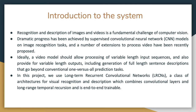The recognition and description of images and videos is a fundamental challenge of computer vision, but dramatic progress has been achieved by supervised convolutional neural networks (CNN) models on image recognition tasks, and a number of extensions to process videos have been recently proposed. Ideally, a video model should allow processing of variable-length input sequences and also provide variable-length outputs, including generation of full-length sentence descriptions. In this project we use Long-term Recurrent Convolutional Networks (LRCNs), a class of architectures for visual recognition and description which combines convolutional layers and long-range temporal recursion, and is end-to-end trainable.